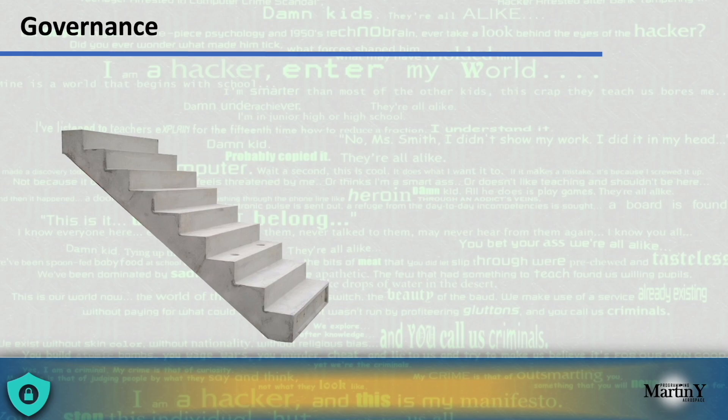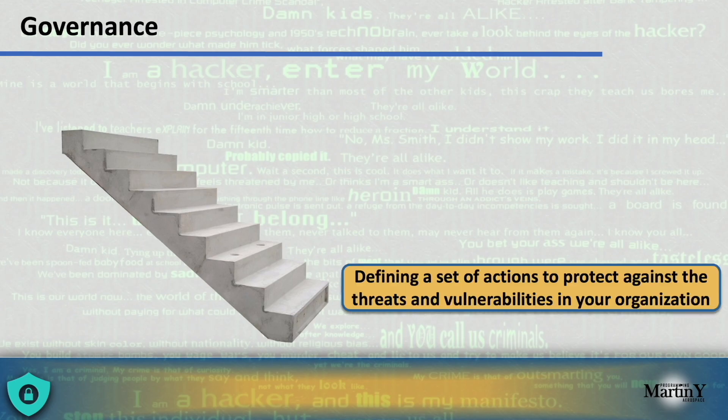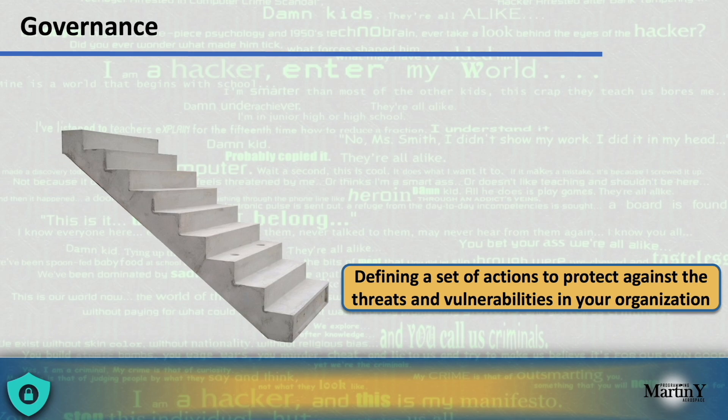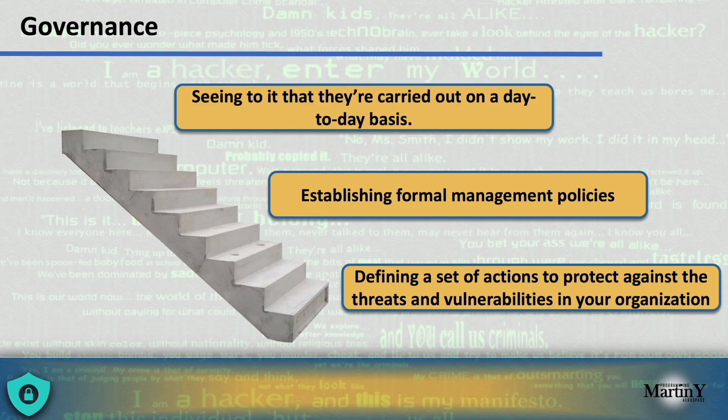Governance. In this video, we're going to talk about governance. The cybersecurity risk planning and management has a set called governance, which covers the policies, procedures and processes to manage and monitor your organization's regulatory, legal, environmental, and operational requirements. This is basically a way of defining a set of actions to protect against threats and vulnerabilities in your organization, establishing formal management policies and carrying those policies out on a day-to-day basis.